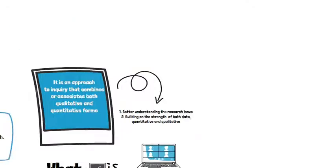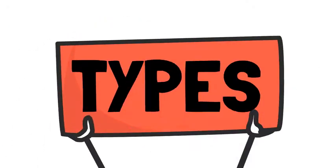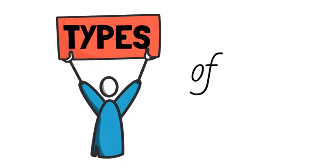There are four types of mixed method research. First, convergence or triangulation design. This design combines quantitative and qualitative simultaneously.